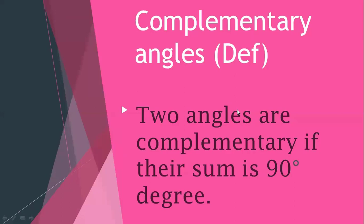Now let's see what a complementary angle is. Two angles are complementary if their sum is 90 degrees. This may be adjacent angles or not. For example, one angle is 80 and the other is 10. Two angles can also be 45 plus 45, or 60 plus 30. One angle is 60 and the other is 30 — two angles that add up to 90 degrees.